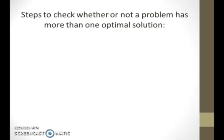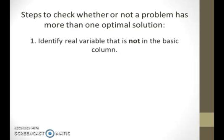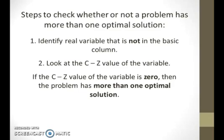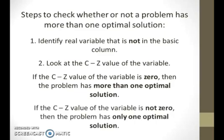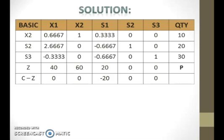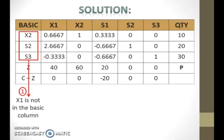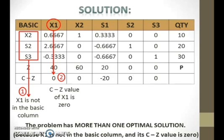To check whether or not a problem has more than one optimal solution: first, identify the real variable that is not in the basic column. Second, look at the C minus Z value of that variable. If the C minus Z value is 0, then the problem has more than one optimal solution. If the C minus Z value is not 0, then the problem has only one optimal solution. From this last simplex table, the real variable not in the basic column is x1, and the C minus Z value of x1 is 0. Therefore, the problem has more than one optimal solution.